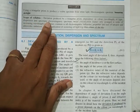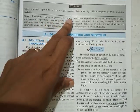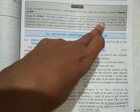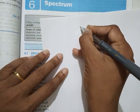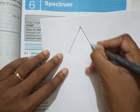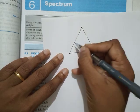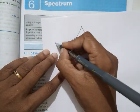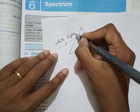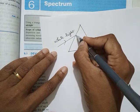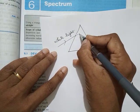The scope of the syllabus says: deviation produced by a triangular prism, and dependence of color of light. This chapter deals with spectrum. When you hear the word spectrum, you know that whenever white light is made to fall on a prism, it splits into seven colors.